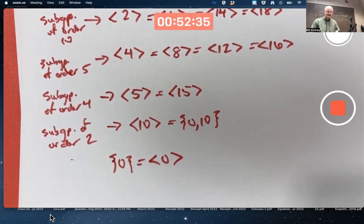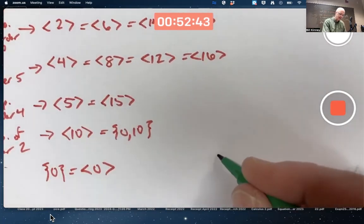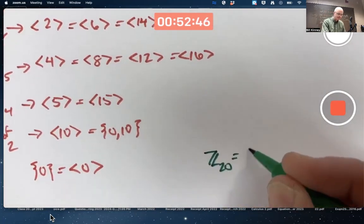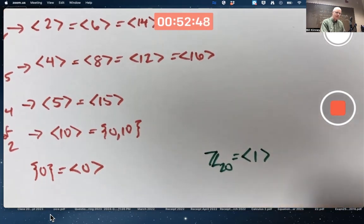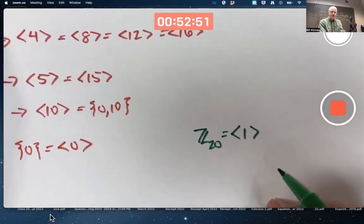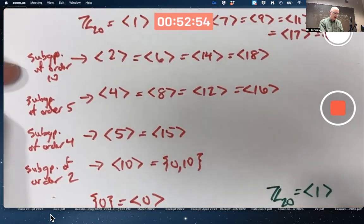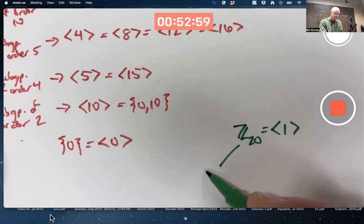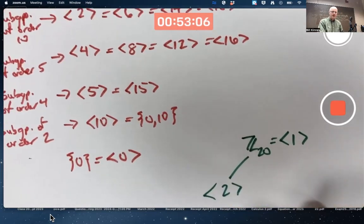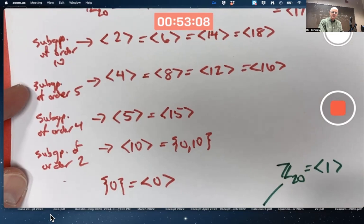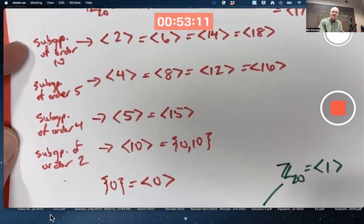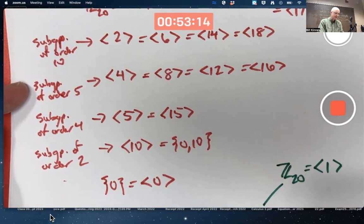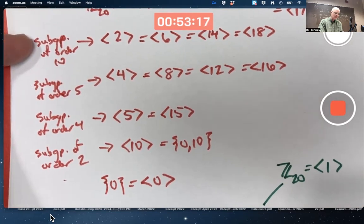Now we want to put these together in a lattice diagram showing subgroup inclusions. Put the Z20 at the top, generated by 1, for example. The next biggest subgroup is order 10. Put that below Z20 and maybe a little bit to the left. The next subgroup, next size, has order 5. And 5 does divide 10.